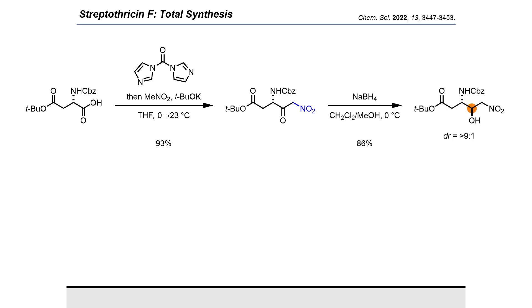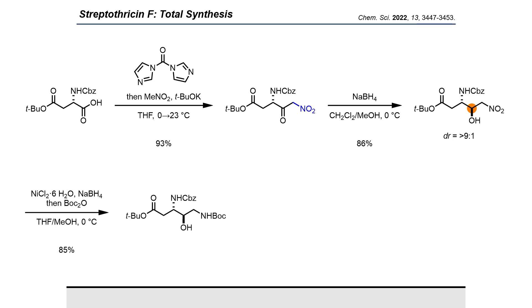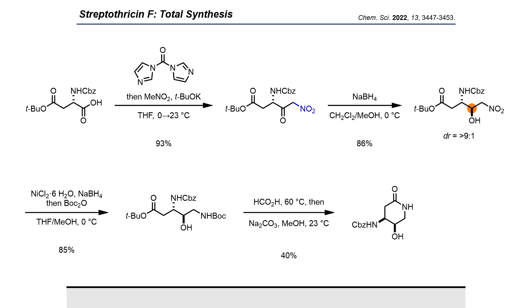Diastereoselective reduction was then carried out under Felkin-Anh conditions, followed by nitro reduction through in-situ nickel boride generation. In the same pot, the addition of Boc anhydride gave our protected amino alcohol. Without Boc protection in this instance we simply couldn't rescue our product from the aqueous layer upon quench and extraction. Warming of this product in formic acid deprotected the previously installed Boc group and promoted lactamization. However, a small amount of inseparable formylated lactam was always generated, and therefore addition of sodium carbonate and methanol was necessary to cleave this byproduct. Finally, the diastereomeric mixture from the previous keto reduction can be purified on silica at this stage.